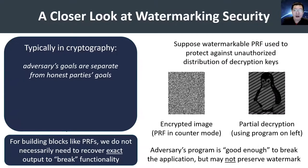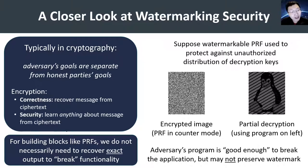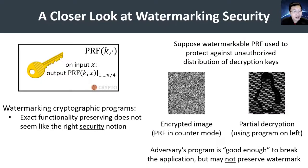More broadly, the problem with the existing definition is that it fundamentally ties the adversary's goals to the functionality requirements itself. Typically in cryptography, we try to decouple these. For instance, in the case of encryption, we require that honest parties are able to recover the message in its entirety, but when we consider the security notion, recovering any information about the message from the ciphertext constitutes a successful attack. Naturally, the same philosophy should apply to software watermarking for pseudorandom functions. Exact functionality preserving seems like a natural notion for correctness, but it does not seem like the right notion for security.